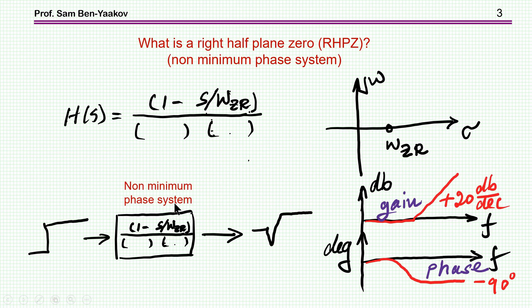So what is a right half plane zero? Here I'm showing a small signal transfer function of some PWM converter. And here at the numerator we see a zero. But unlike a regular or left side plane zero, we have here a right half plane zero because we have a minus. This minus implies that the location of the zero is on the right side of the complex plane, as opposed to the regular zero which is on the left side.